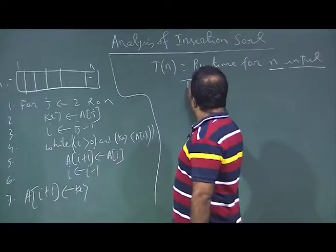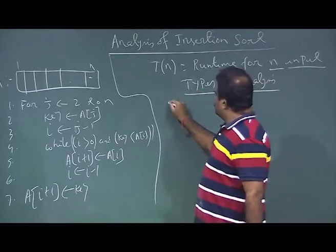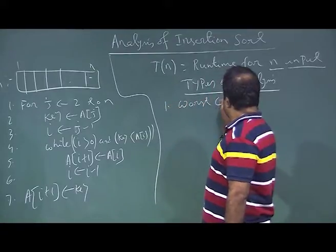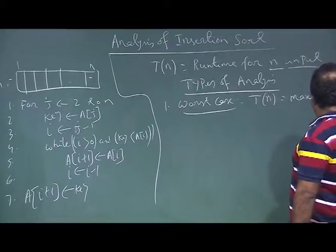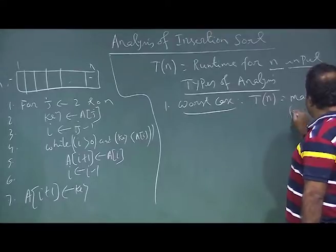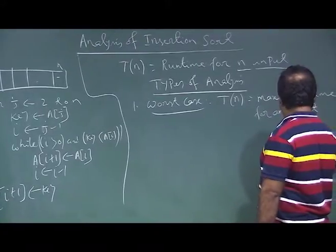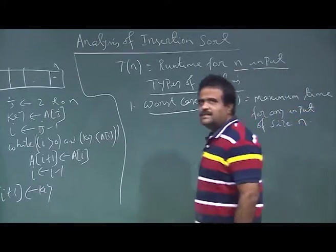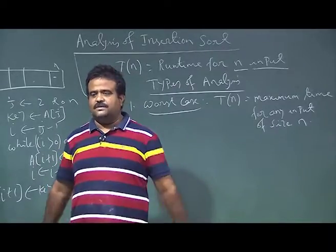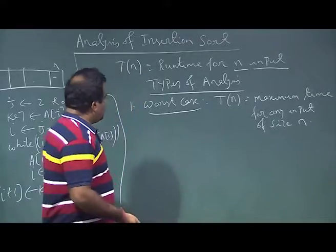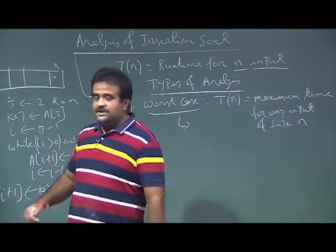There are three types of analysis we will do. The first one is worst case: T(n) is the guaranteed maximum time our code takes for any input of size n. We fix n, and worst case gives us the maximum time.